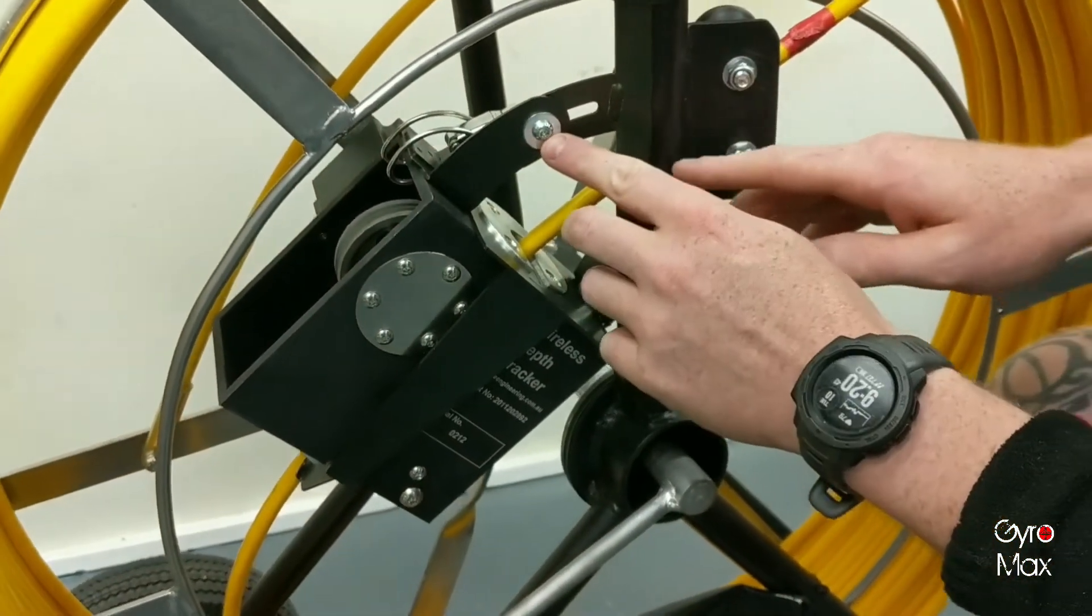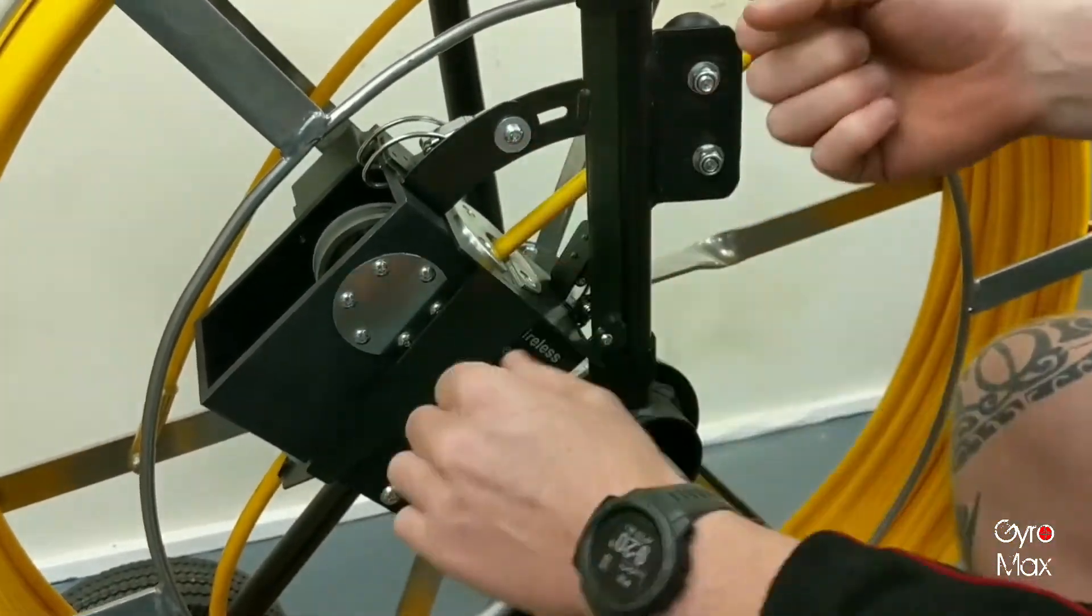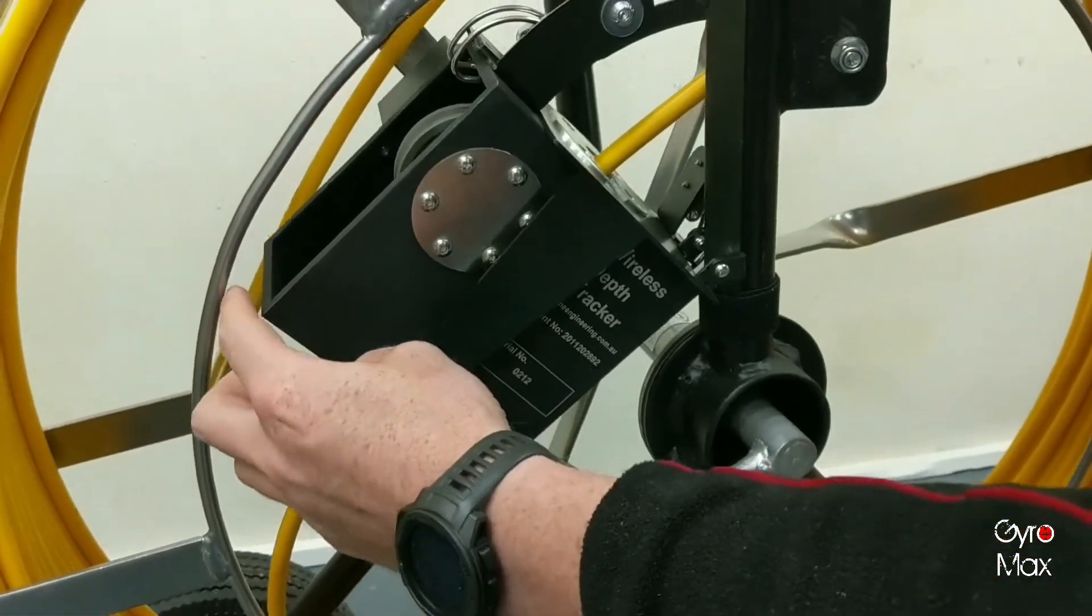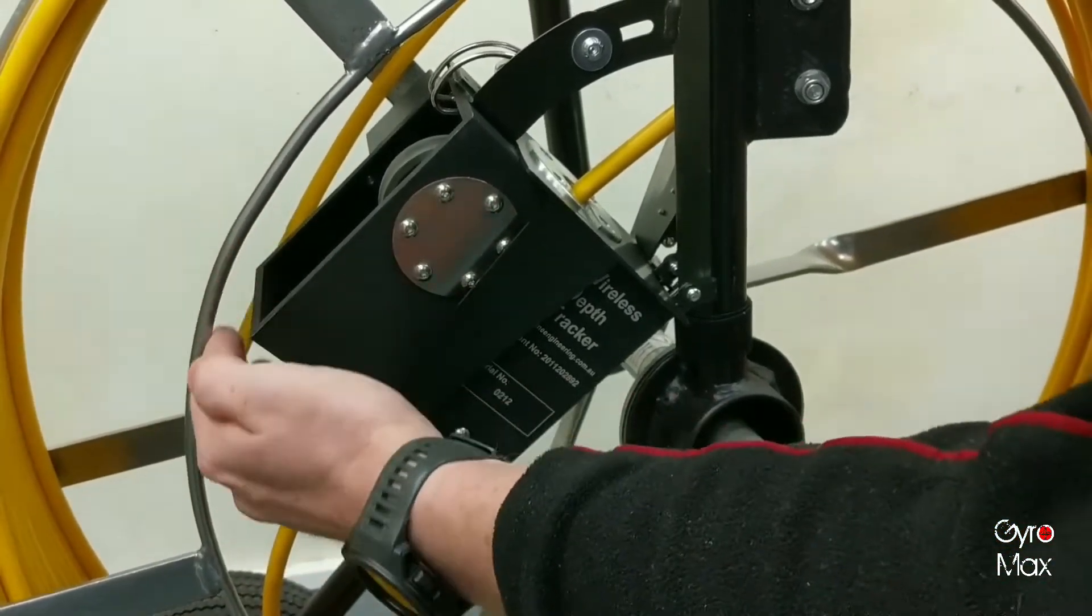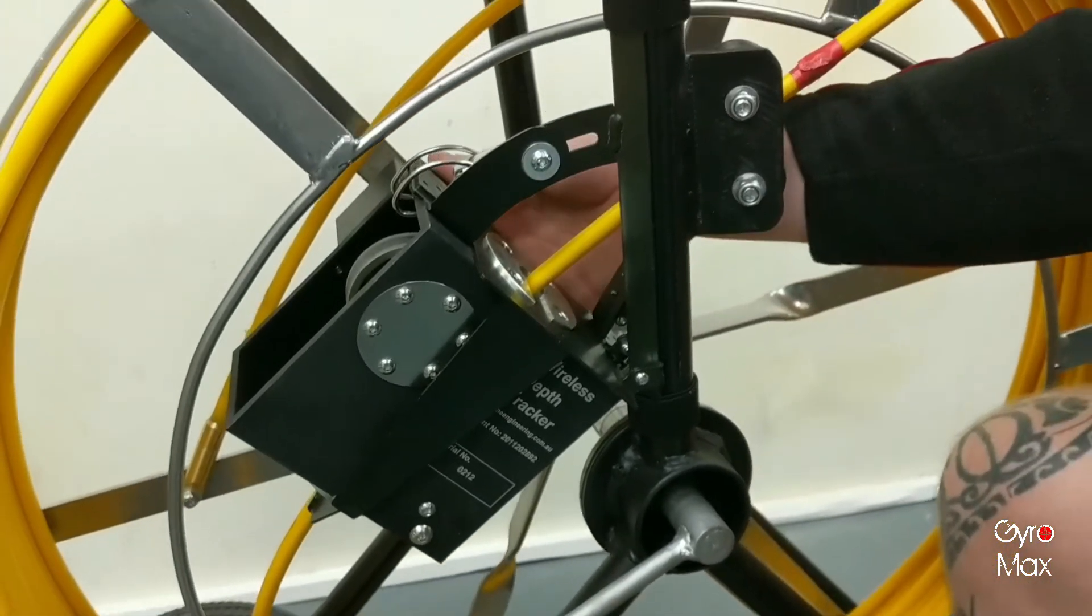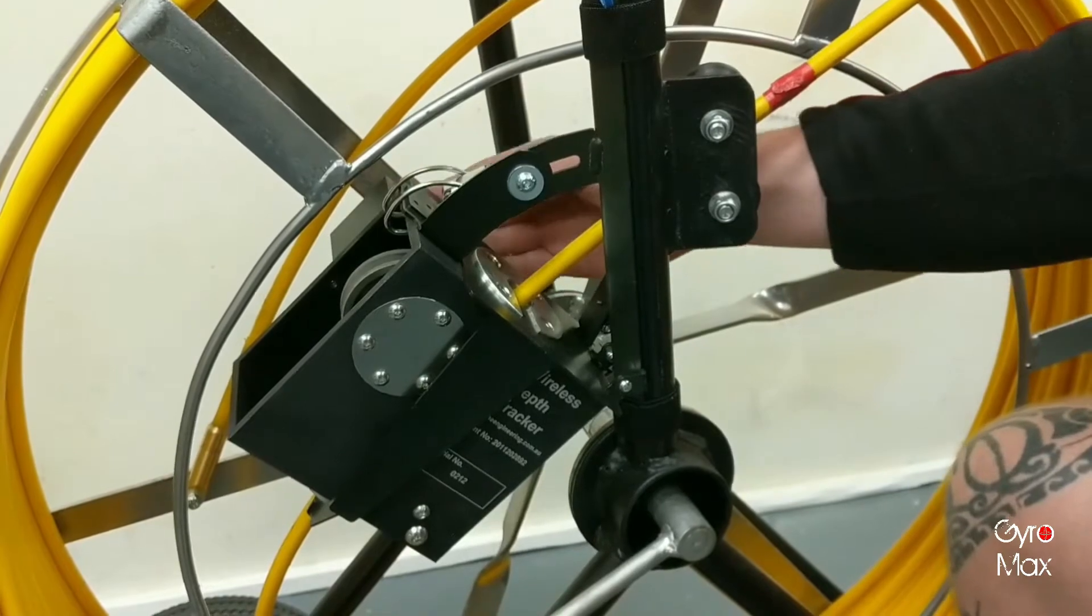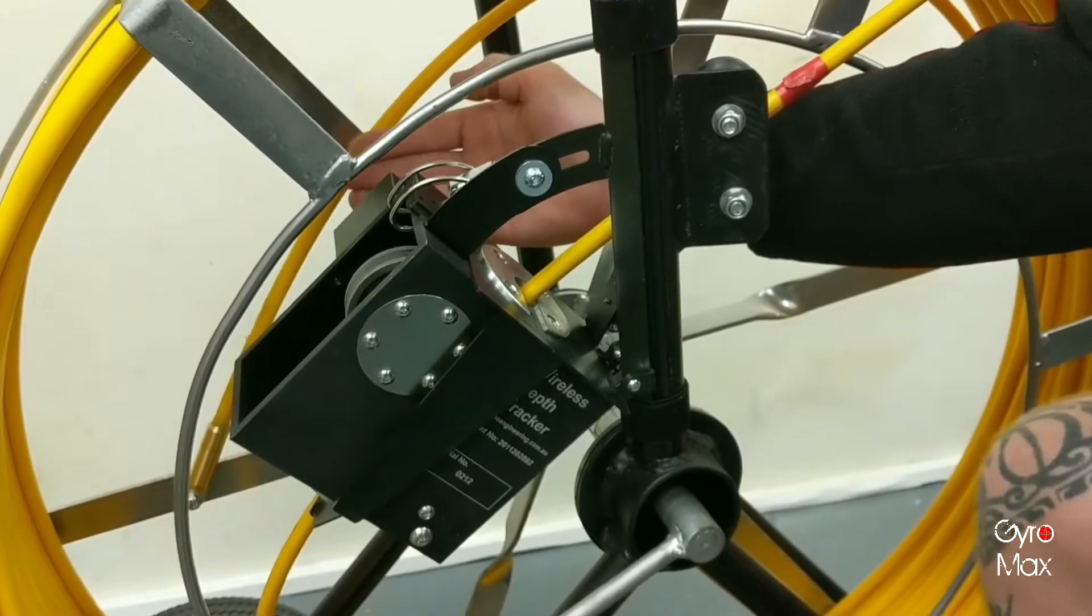If you need to adjust this bolt - if the wheel feels tight when you're moving in and out - adjust this bolt so the back of the counter is close to the frame. To turn it on, press the button at the back once and a green light will appear. If you hold your hand here, you can see the green light.